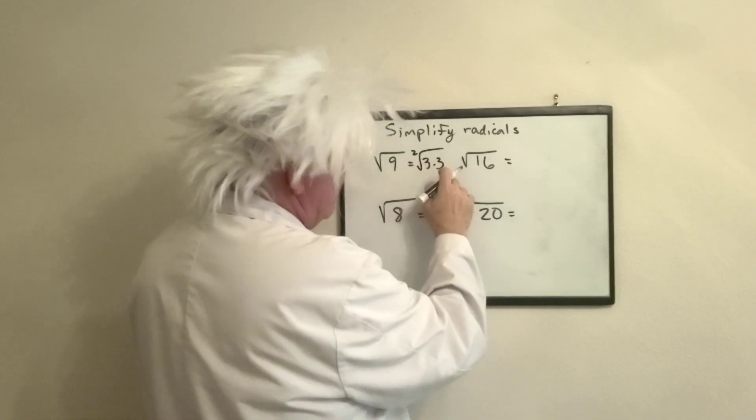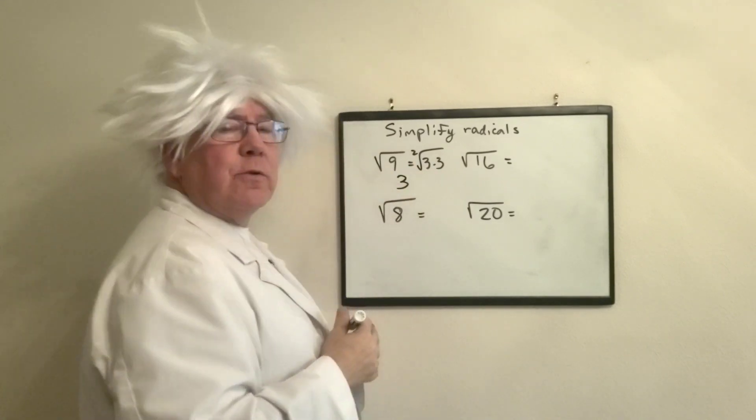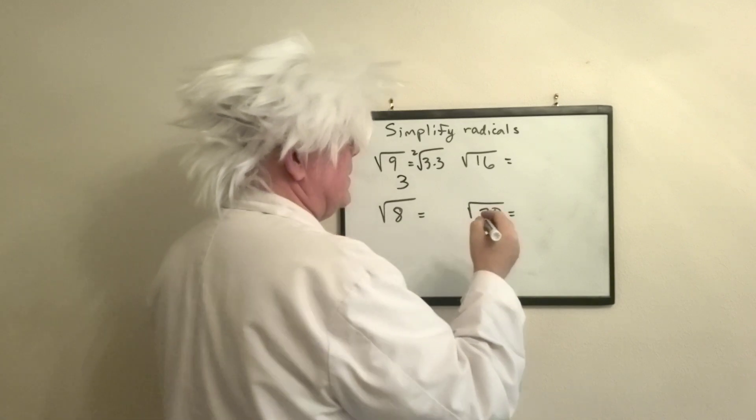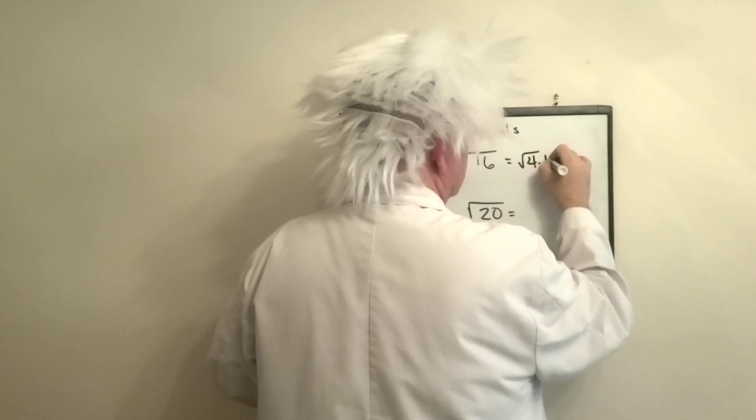So I have two threes, so we know that the square root of nine is three. Square root of sixteen, that's going to be the square root of four times the square root of four, which equals four.